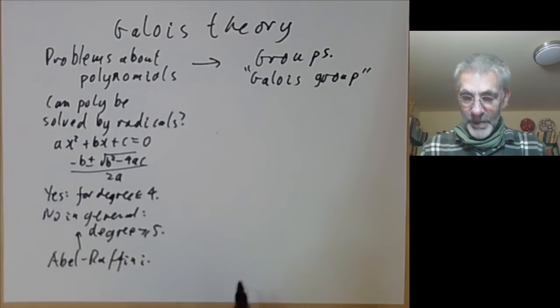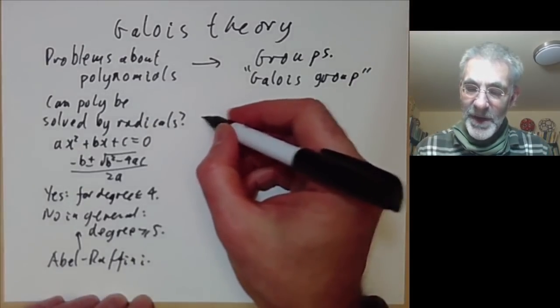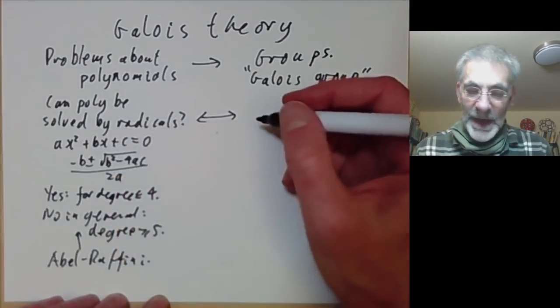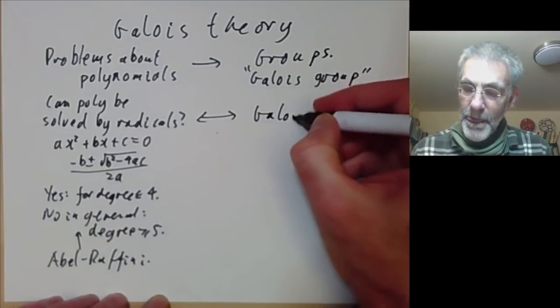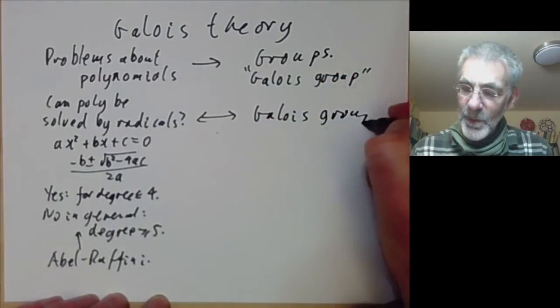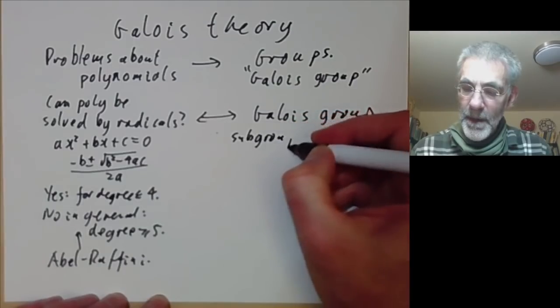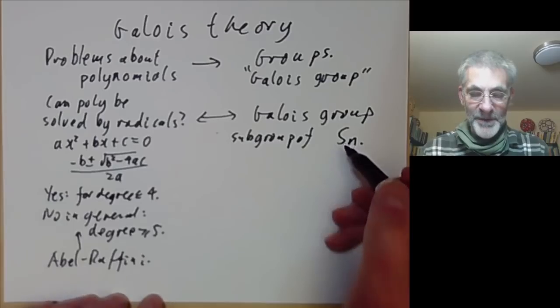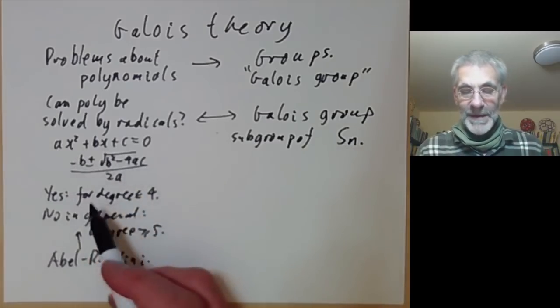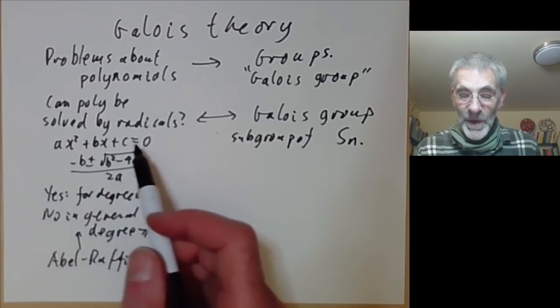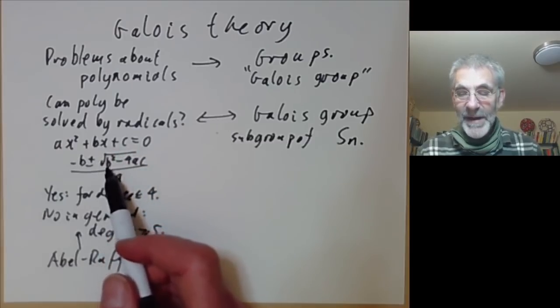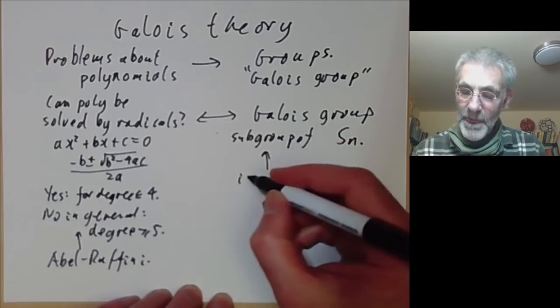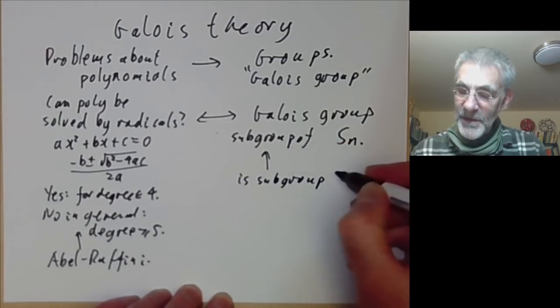If you turn this into Galois theory, if you've got a degree n polynomial you get a Galois group which is a subgroup of the symmetric group on n points Sn. It turns this problem about whether a polynomial can be solved by radicals into the problem about whether this subgroup is solvable.